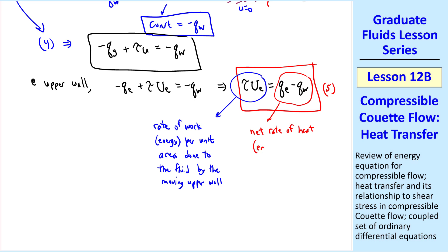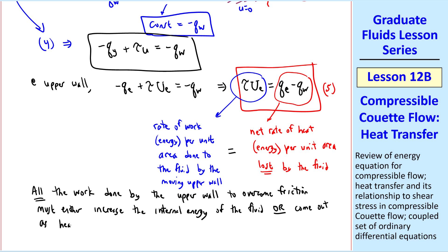The term on the right represents the net rate of heat, again energy, per unit area, lost by the fluid. In other words, qe must be greater than qw to overcome this work that's added to the fluid. And these two must be equal. In other words, all the work done by the upper wall to overcome friction must either increase the internal energy of the fluid, or come out as heat.